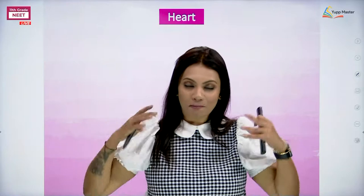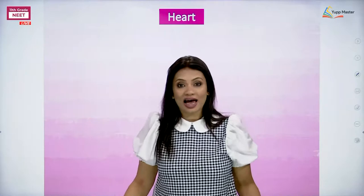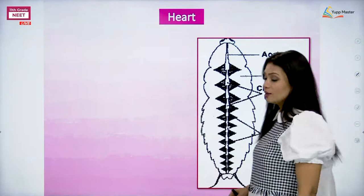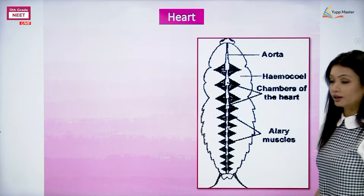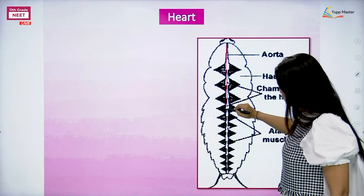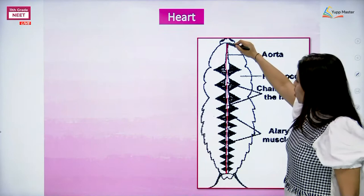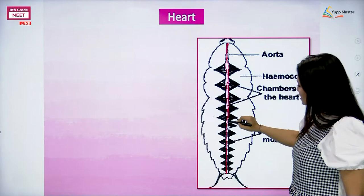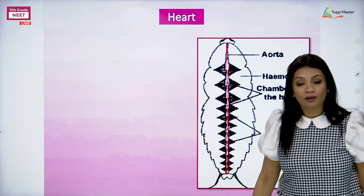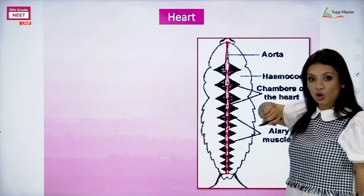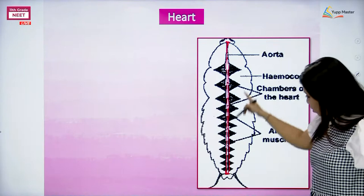That big heart actually has 13 chambers in it. When we look at the diagram of the heart of the cockroach, the whole region running from here all the way till the end - these are the chambers of the heart. You can see how the heart is actually running right from the anterior-most part of the cockroach all the way till the posterior-most end.